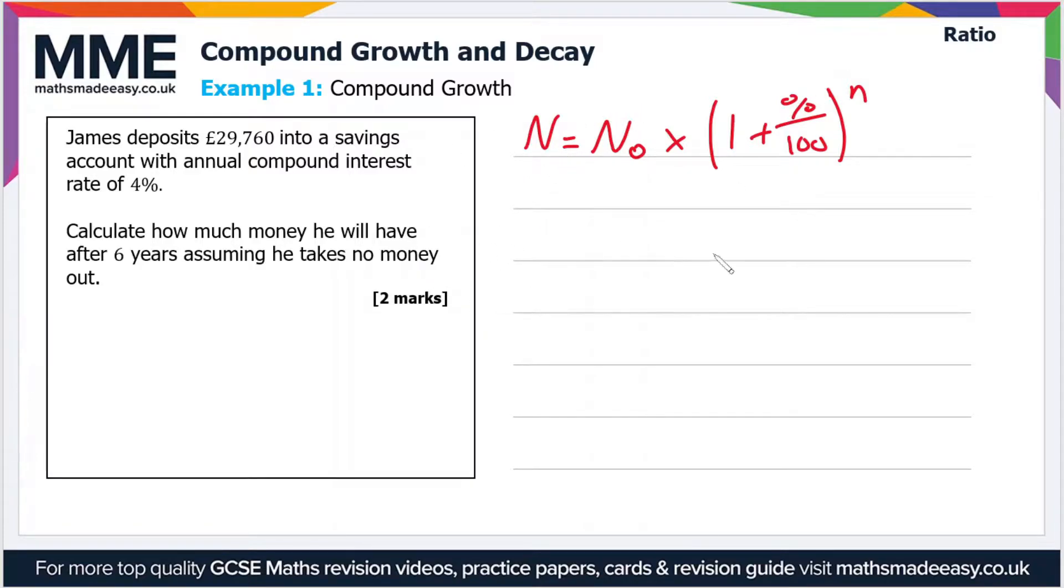So now we just have to whack all our values into this formula and it'll give us our answer. Very nice. So N₀ is 29,760—that's the original amount in the bank account. Then we multiply by 1 plus the percent change, 4%, divided by 100 to the power n.